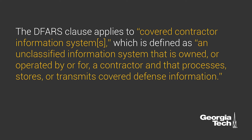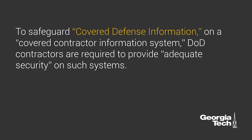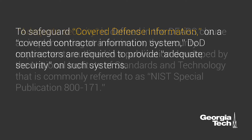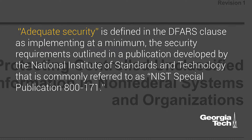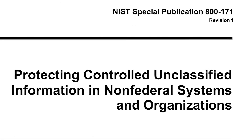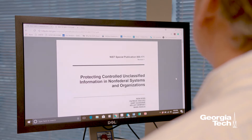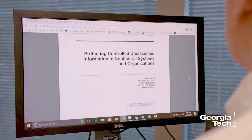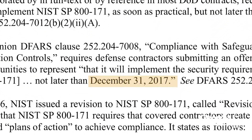A covered contractor information system is specifically an unclassified information system. To safeguard covered defense information on a covered contractor information system, DOD contractors are required to provide adequate security on such systems. Adequate security is defined in the DFARS clause as implementing, at a minimum, the security requirements outlined in a publication developed by the National Institute of Standards and Technology, commonly referred to as NIST Special Publication 800-171. The DFARS clause instructs DOD contractors to implement the NIST SP 800-171 security requirements no later than December 31, 2017.